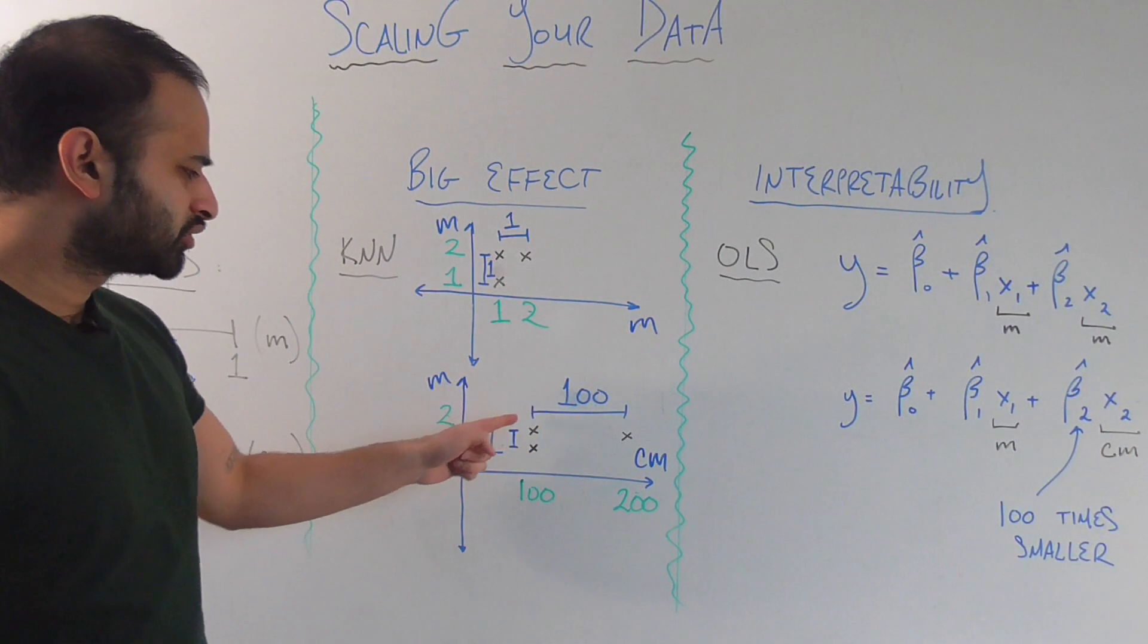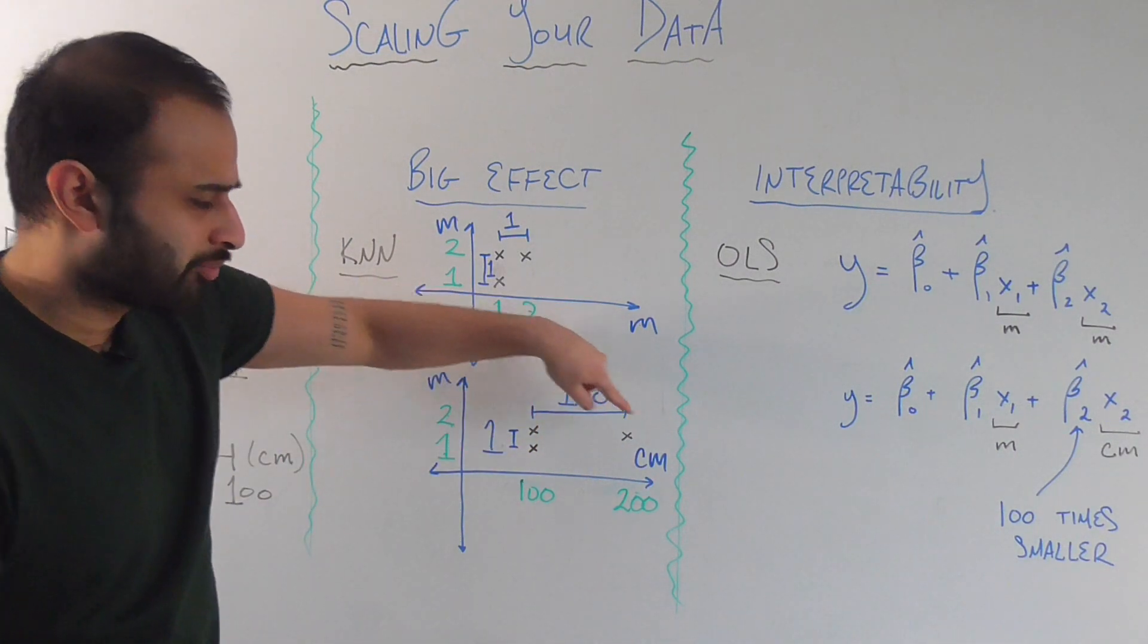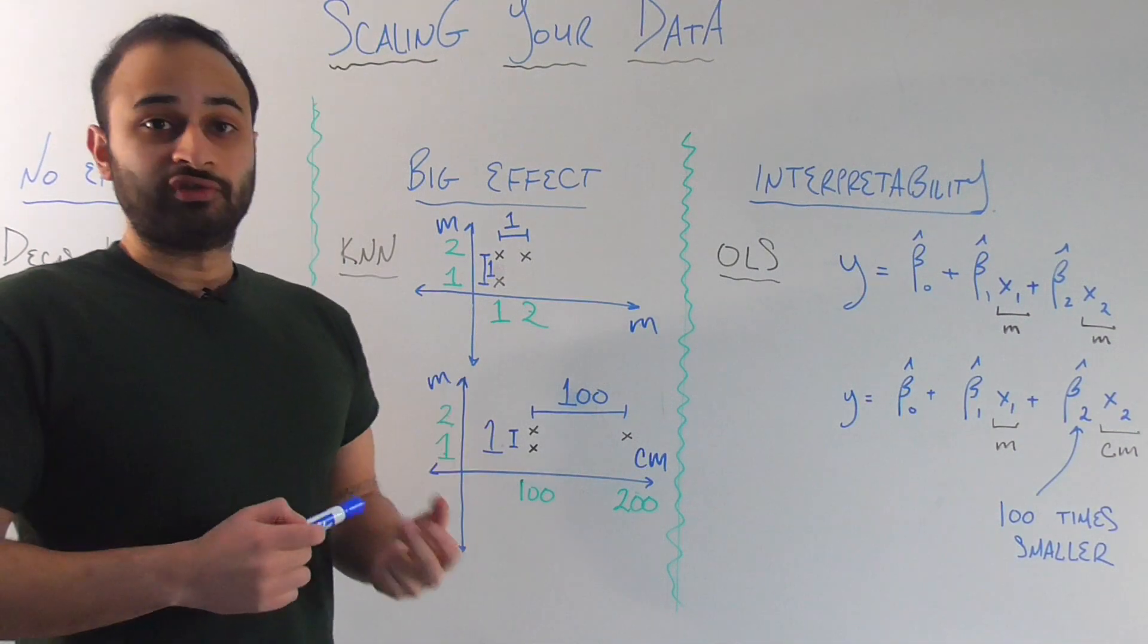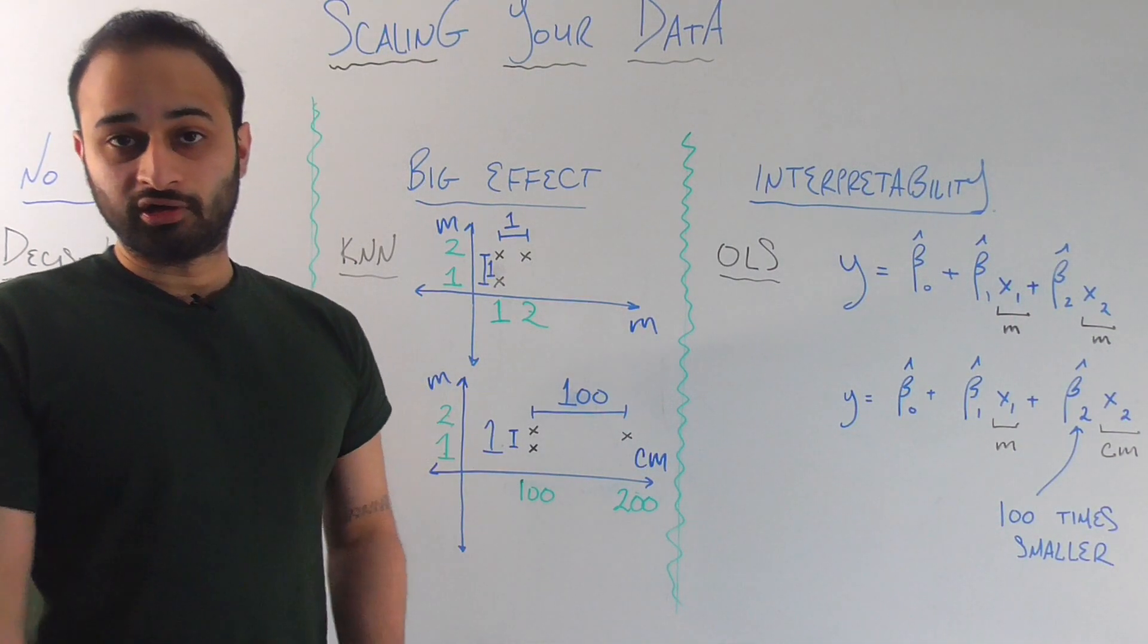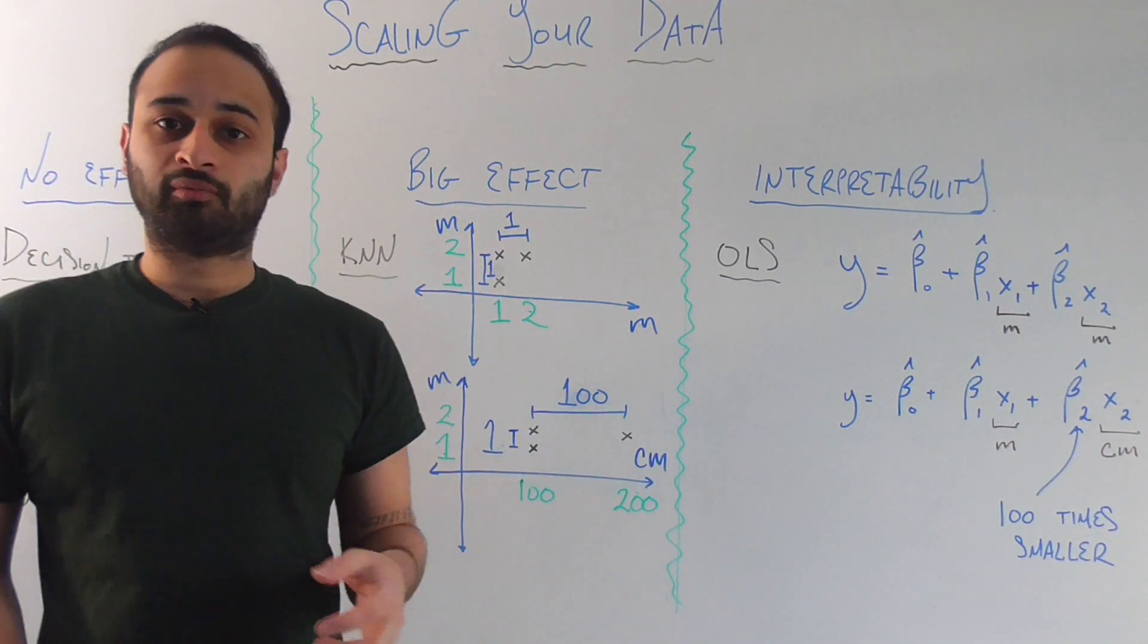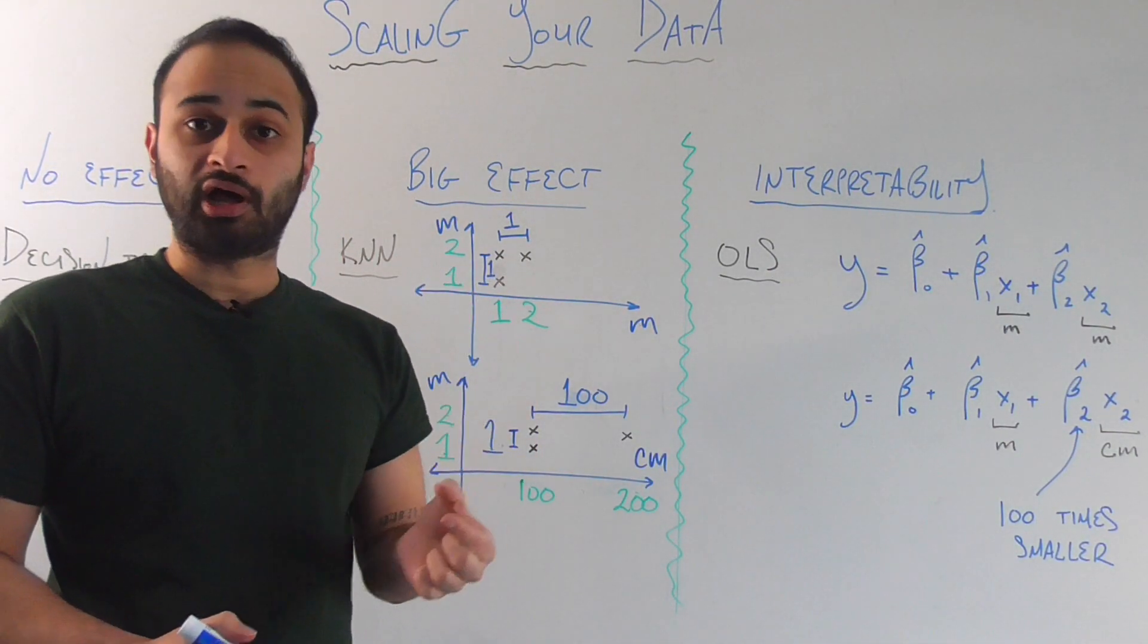So we would say that, oh, these are much closer together than these two top ones up here. And that's just not the case because we're measuring on different variables. So this is definitely a case where you do want to scale your data. Because if you scale this data, then it's going to bring everything in the same relative area. So you can measure whose neighbors with who a lot better.